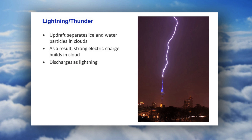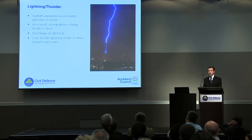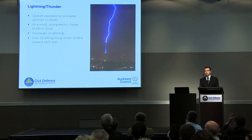In New Zealand we see about 50,000 lightning strikes each year from cloud to ground, and that doesn't include cloud-to-cloud sheet lightning. Comparatively, in Australia they have around 5 to 40 million strikes a year, and that's because it's such a convective, warm environment.